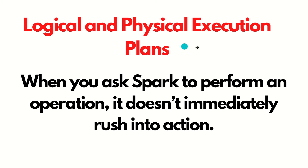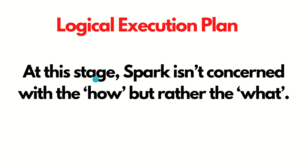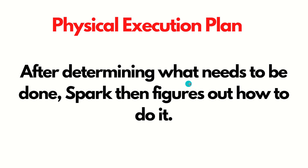The next point is logical and physical execution plans. When you ask Spark to perform any operation, it doesn't immediately rush into action. Instead, it takes a step back and formulates a plan. There are two types of plans: logical plan and physical plan. In the logical plan, Spark isn't concerned with how the task will be done, but rather what needs to be done. In the physical plan, after determining what needs to be done, Spark figures out how to do it.